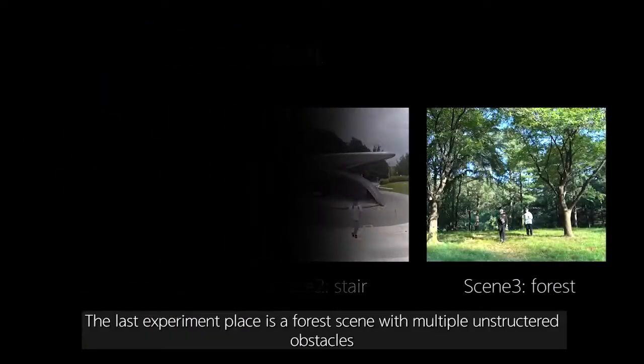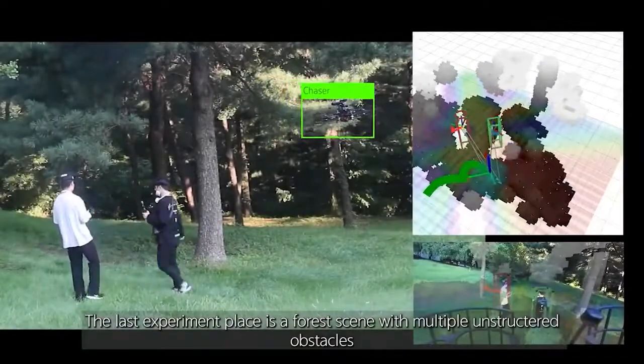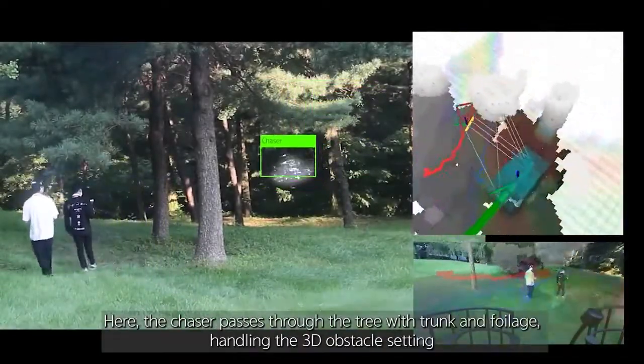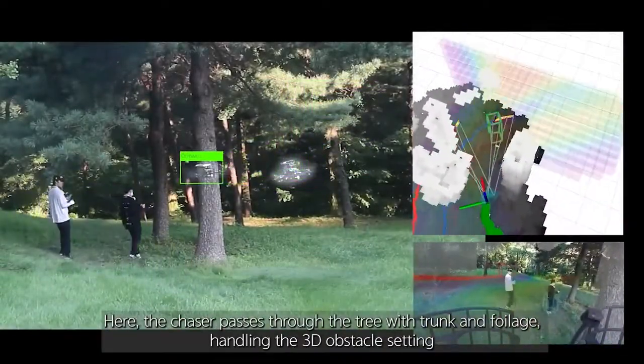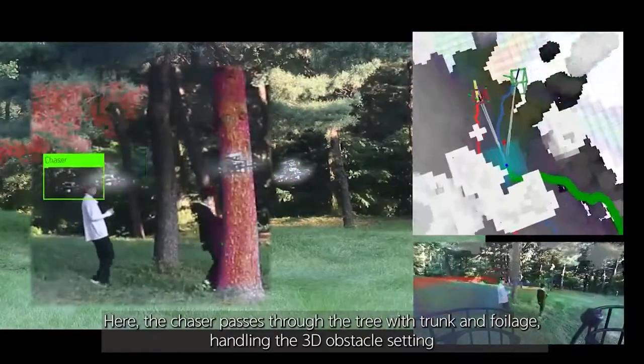The last experiment place is a forest scene with multiple unstructured obstacles. Here, the chaser passes through the tree with trunk and foliage, handling the 3D obstacle setting.